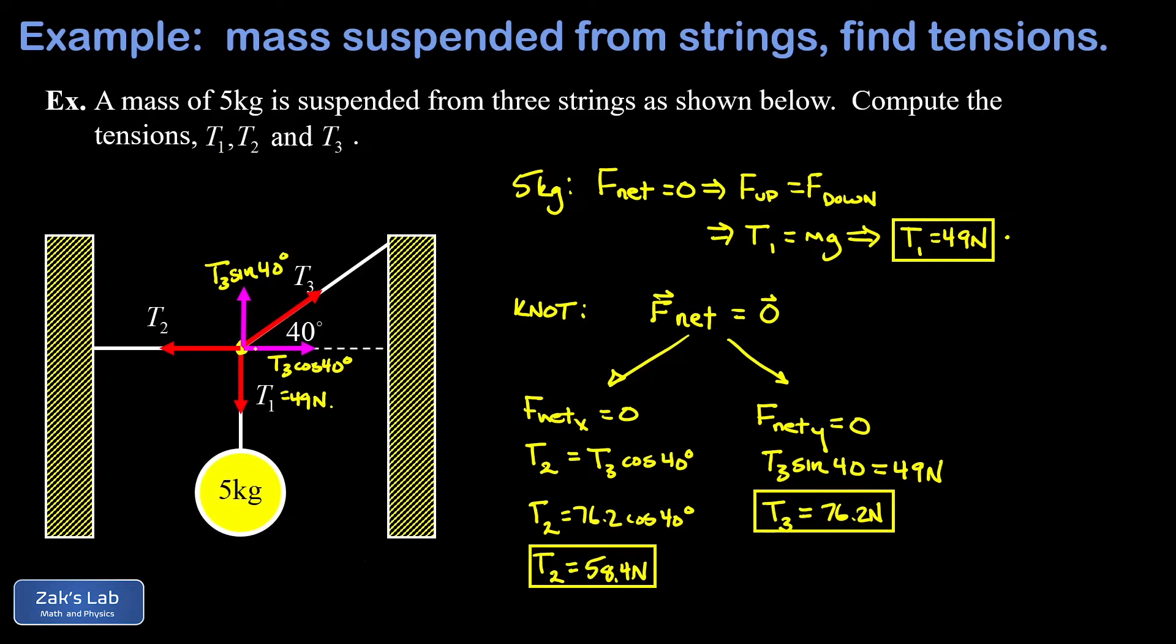And just verify real quick that T2 is going to be equal to T3 cosine 40 when you plug in the numbers that we found. Verify that T3 sine 40, the vertical component of T3, is equal to 49 newtons, just to double check that everything is working.